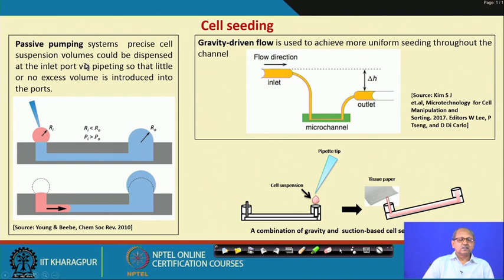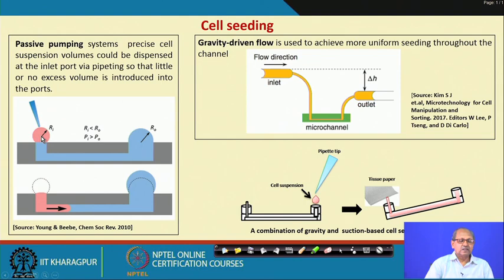Another seeding method is passive pumping, where you drop a discrete amount of cell suspension into one port. Here, pressure difference between inlet and outlet is governed by the port diameters — the outlet diameter is larger than the inlet, so pressure is higher at the inlet. The drop then enters the microfluidic channel by this pressure difference, allowing uniform and precise seeding. You can enhance flow further by placing tissue paper at the outlet, which draws fluid by capillary action.